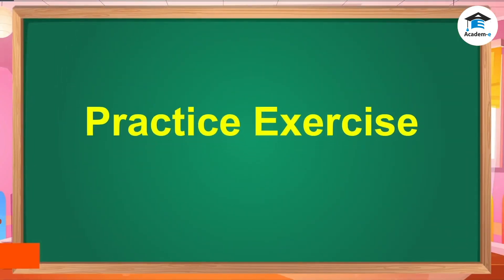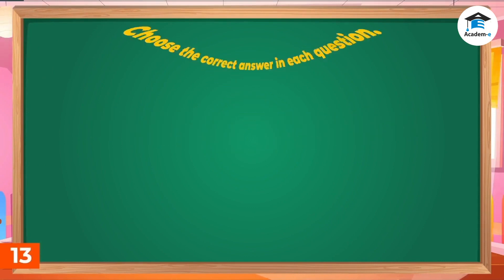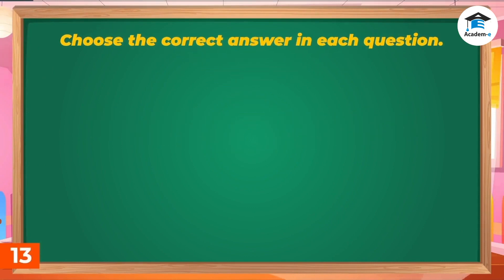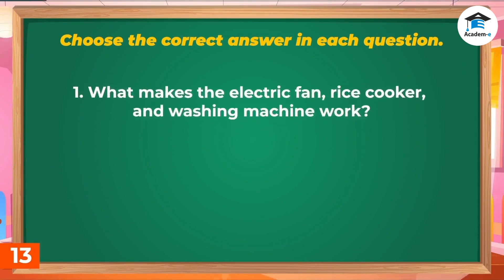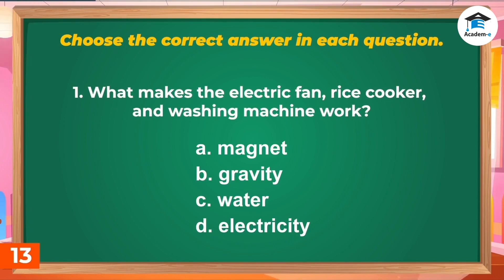Practice exercise — choose the correct answer for each question. Question 1: What makes the electric fan, rice cooker, and washing machine work? A. Magnet, B. Gravity, C. Water, D. Electricity. Answer: D. Electricity.